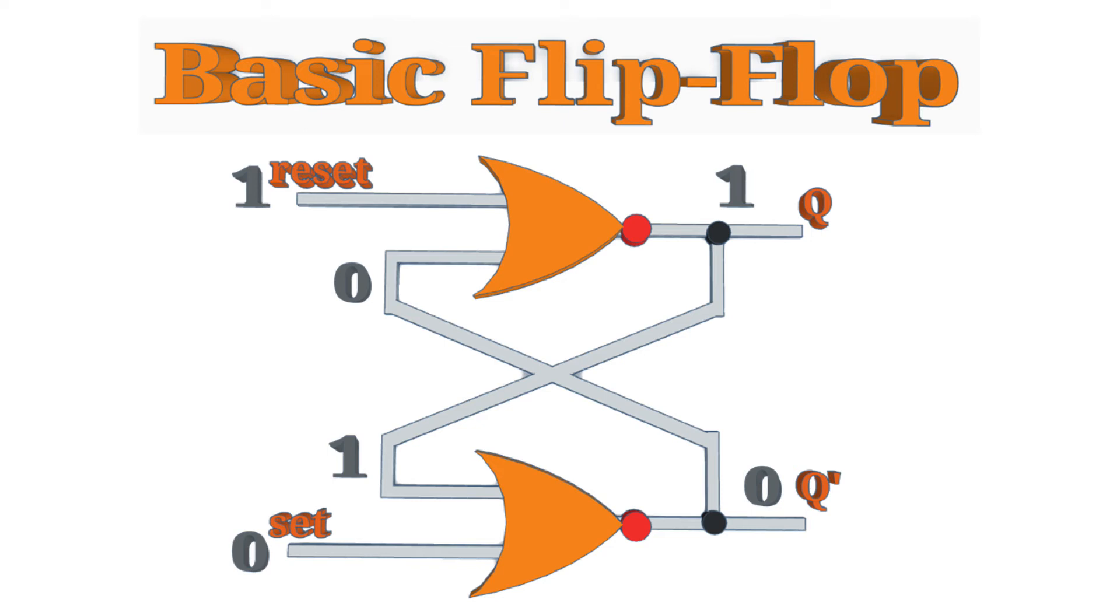Now, if reset is taken high instead, then the top NOR gate has a one input. So, its output changes to zero, setting Q to zero. The bottom NOR gate now has both inputs to zero. So, its output changes to one. Also setting the second input to the top NOR gate to one. So, Q is set to zero, and Q prime set to one.